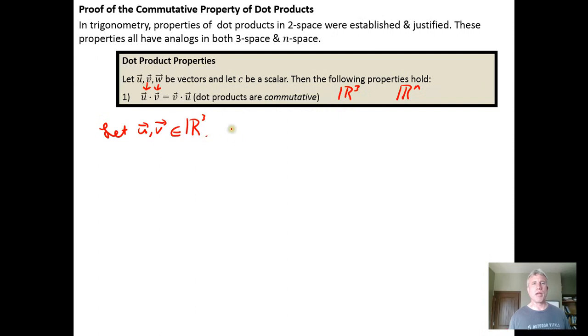And then once we do that, we are going to do some manipulation. So I'm going to say then, and then we would say u dot v, let's look at what u dot v looks like. We want to show that u dot v can be manipulated into v dot u.